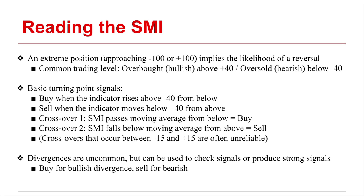Since the indicator includes a moving average, further signals can be taken from crossovers between the indicator's two lines. When the SMI crosses the moving average from below, it results in a buy signal, whereas when the SMI crosses the moving average from above, it's a sell signal. Typically, crossovers in the range between negative 15 and positive 15 are considered too neutral to be relied on as signals.